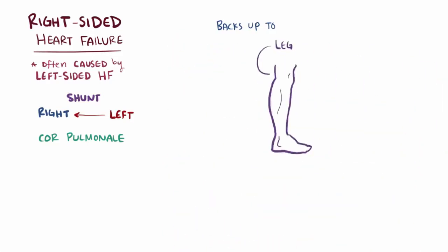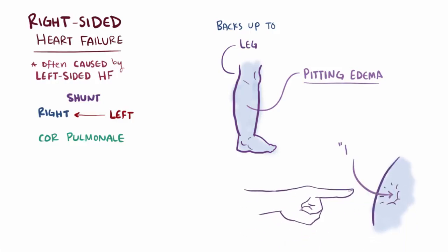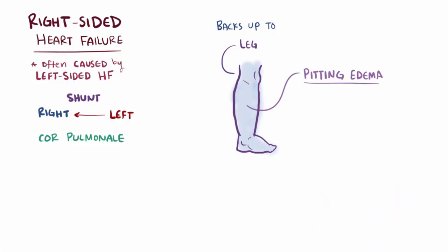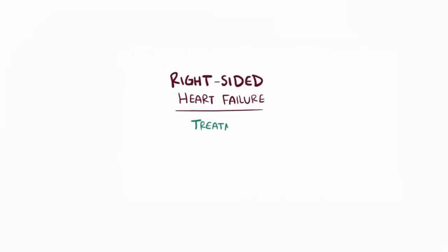Finally, fluid that backs up into the interstitial space of the soft tissue of the legs causes pitting edema, where the tissue is visibly swollen and when you apply pressure it leaves a pit that takes a while to return to its original shape. This generally affects the legs in most people, because gravity causes the majority of the fluid to pool in the dependent parts of the body — the legs when standing, and the sacrum or lower back when lying down. Right-sided heart failure will be treated similarly to left-sided heart failure, especially because it's often a result of left-sided heart failure, so medications like ACE inhibitors and diuretics might be prescribed.